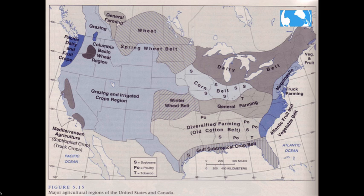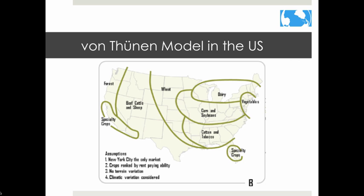This map shows the agricultural regions of the United States and Canada roughly as they are today — a better application of Von Thünen's model. Figure B still assumes New York City and the built-up area as the only market, and crops have been ranked by rent-paying ability. It still assumes no terrain variation, but in this case climate is now considered.